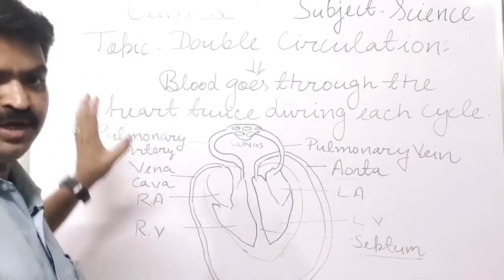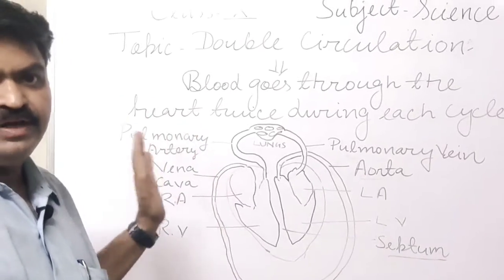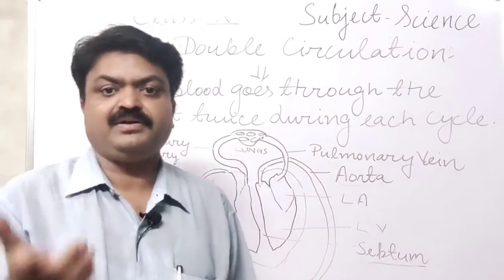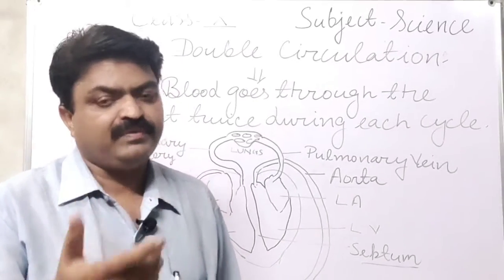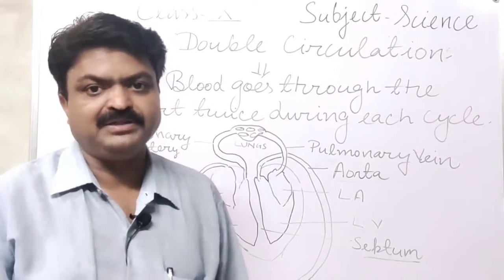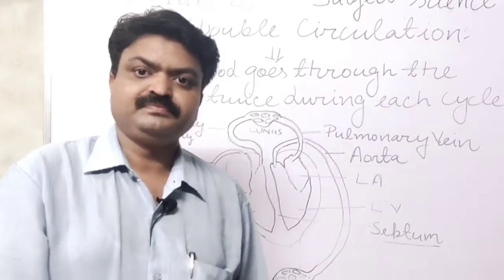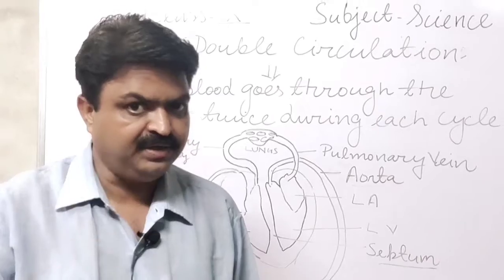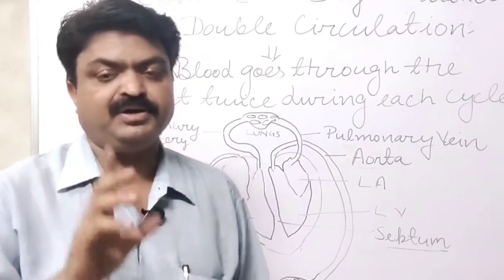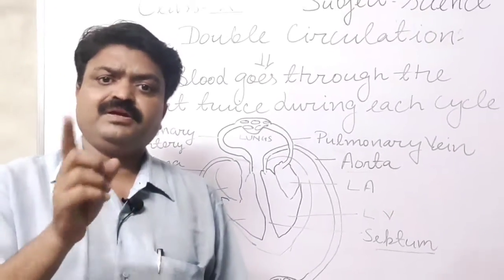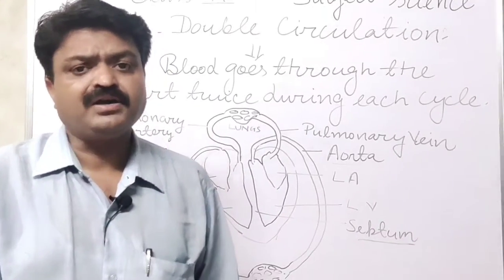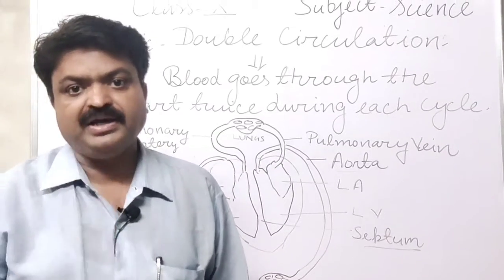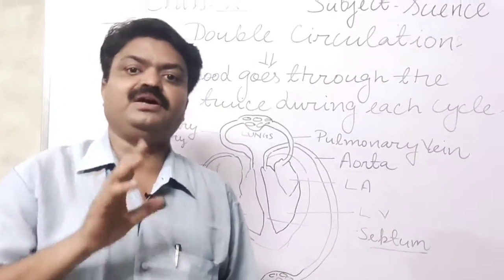This is the importance of double circulation and it is a most important topic. You should also learn about the chambers of the heart by animal group: birds and mammals have a four-chambered heart; reptiles and amphibians have a three-chambered heart; fishes have a two-chambered heart. In the reptiles, the crocodile is an exception because it has a four-chambered heart like us.